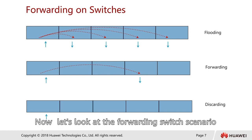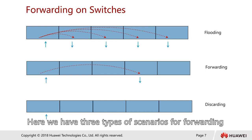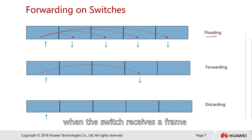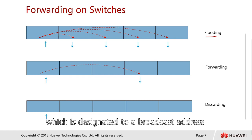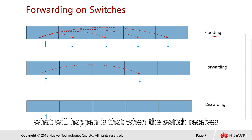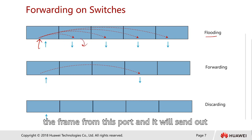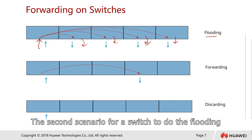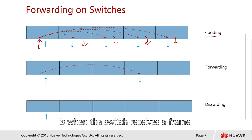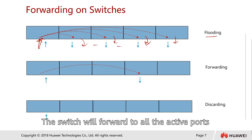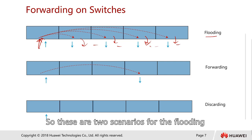Let's look at the forwarding switch scenarios. There are three types of forwarding scenarios. The first is flooding. When the switch receives a frame designated to a broadcast address — in this case, destination MAC address FFFF — the switch receives the frame from one port and sends it out to all active ports. This is called flooding. The second flooding scenario is when the switch receives a frame with a destination MAC address that is unknown to the switch, so it forwards to all active ports.